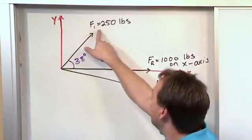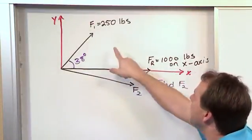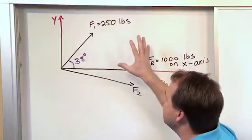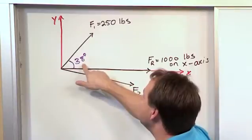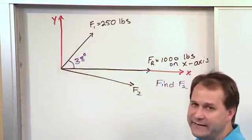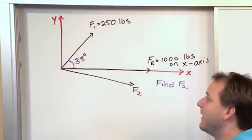We are given force F1 and force F2. Now force F1 is completely defined. We know it's 250 pounds, and we know that it's acting with an angle of 38 degrees to the x-axis. So we know the magnitude and the direction of F1.